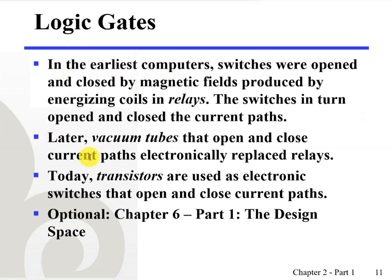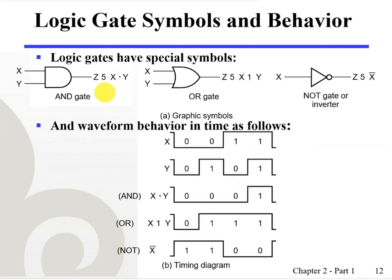In early computers, switches were opened and closed by a magnetic field produced by energizing coils — a switch being an example of a logic gate that takes two states: on and off, true and false. Later, vacuum tubes were used to open and close current paths electronically, replacing relays. Today we have transistors — small electronic circuit components used as electronic switches to open and close current paths. To represent logic gates graphically, we use symbols to designate the three different types of gates: AND, OR, and NOT.